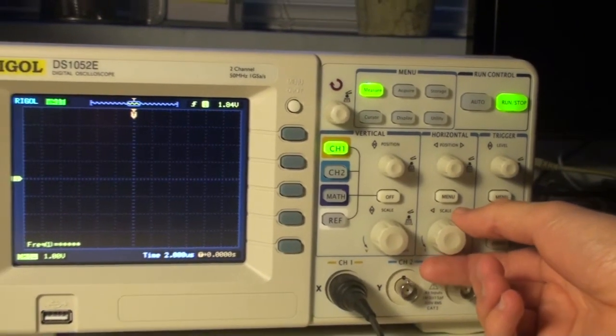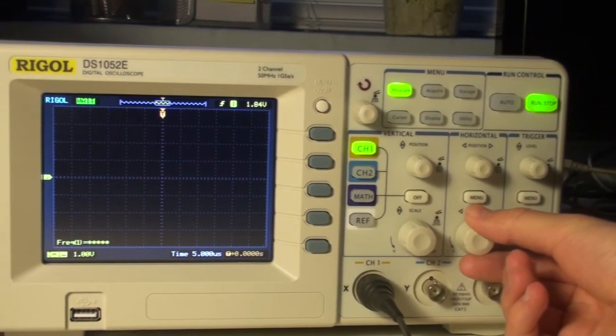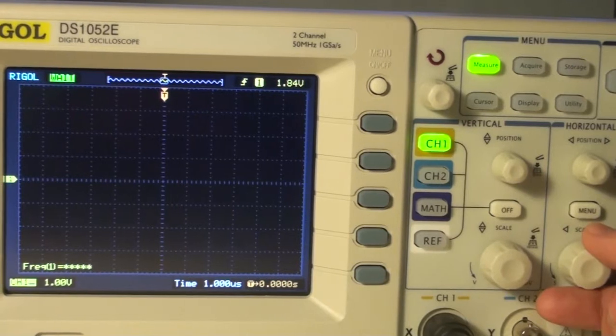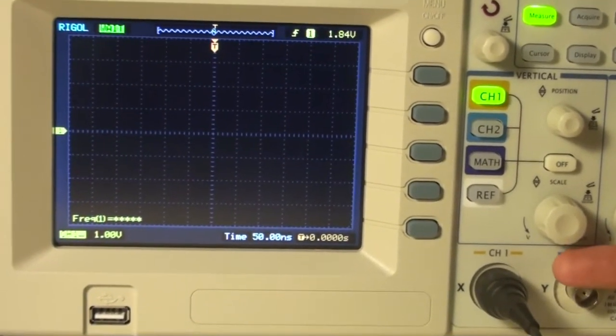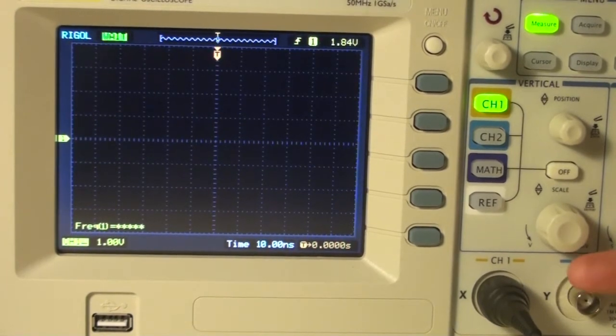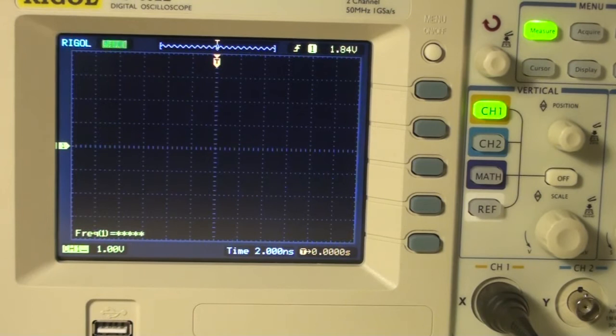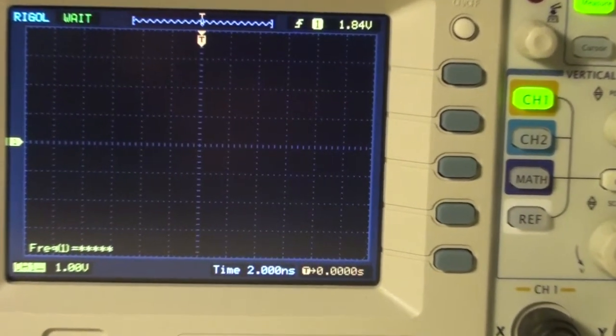If I turn on this, you'll see that the time base changes. And because this is a 100 MHz scope, I can go down to 2 nanoseconds, where the normal DS1052 can only go down to 5 nanoseconds.